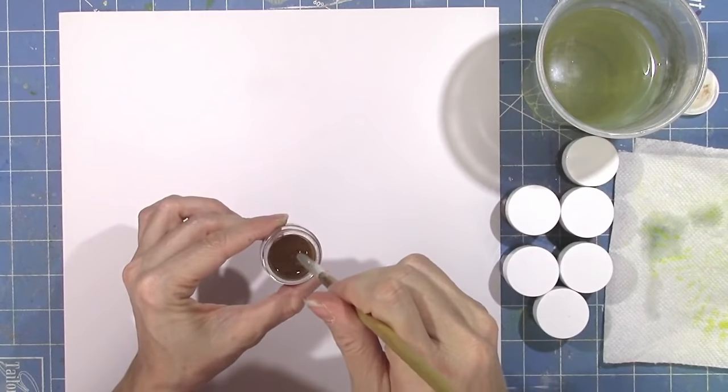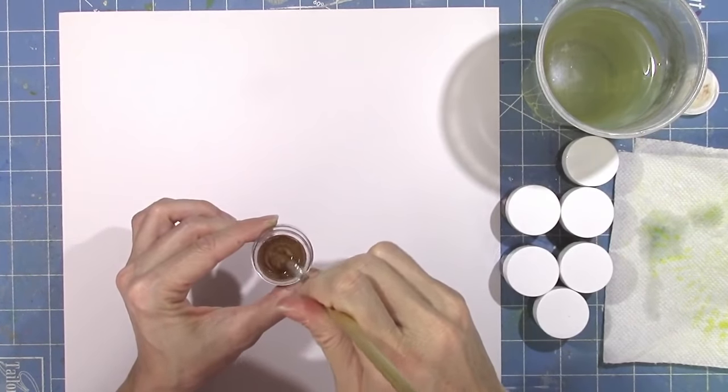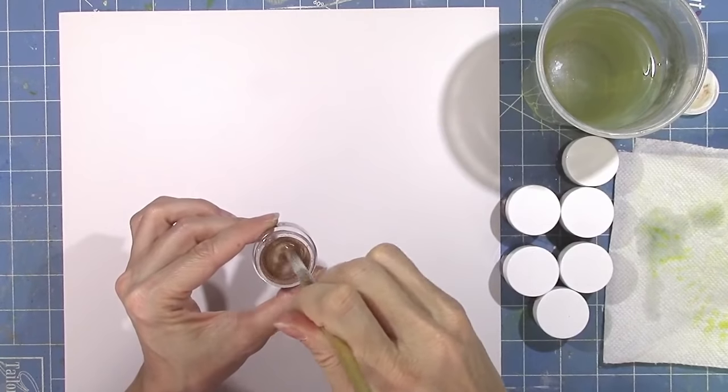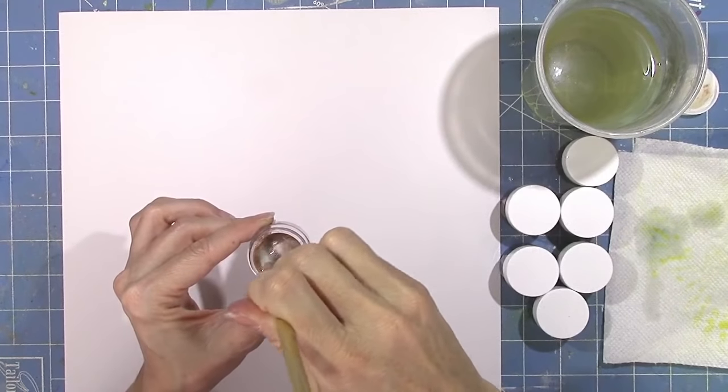So all you have to do is take your paintbrush and stir them up. And as you can see here, there was a little bit of liquid on top, but as you stir it, it's going to start to mix together and you get that beautiful creamy shimmery color.